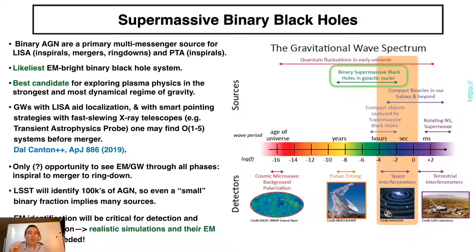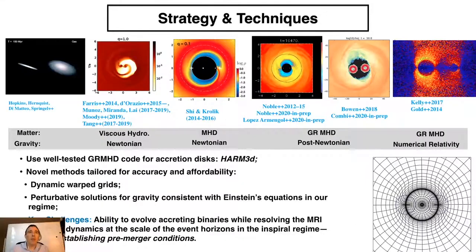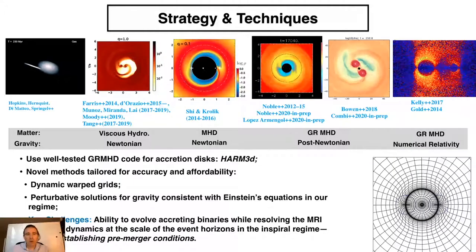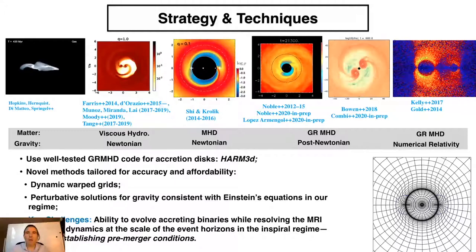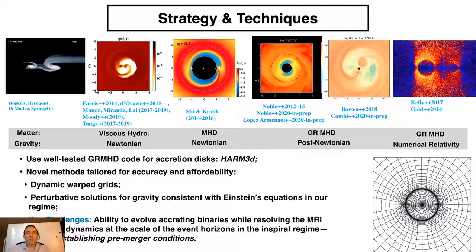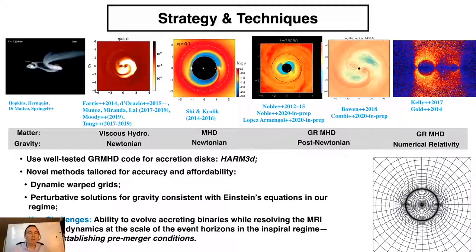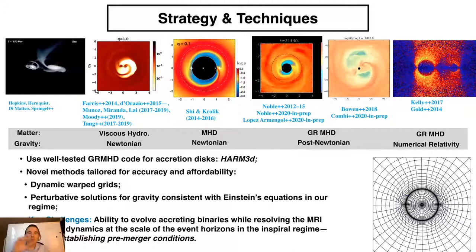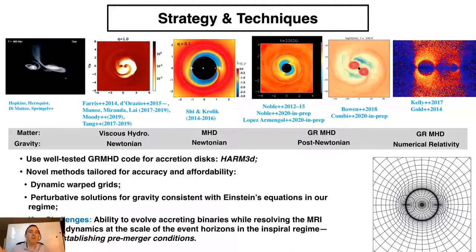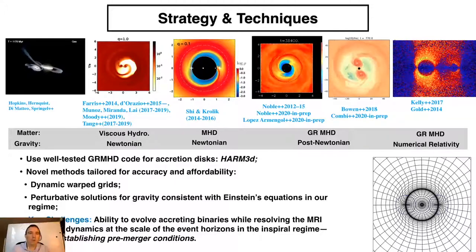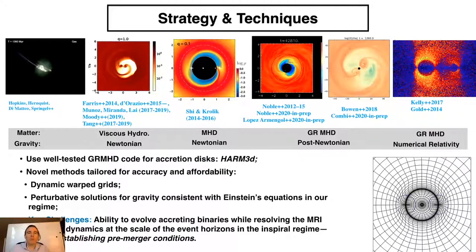We really need good theoretical models to know what we're looking for and to find these systems. A variety of groups are looking at this in different ways — in Newtonian hydro-viscous ways, in Newtonian MHD ways — and we're looking at things in the post-Newtonian regime using GRMHD. That allows us to look at the effect of the inspiral on the circumbinary disk, and also how relativistic effects alter the radiative mechanisms.